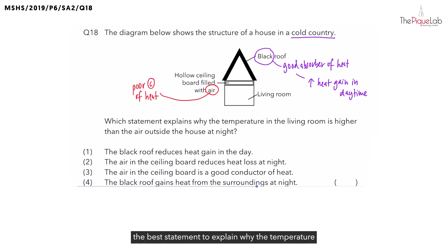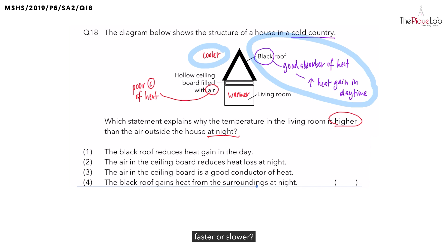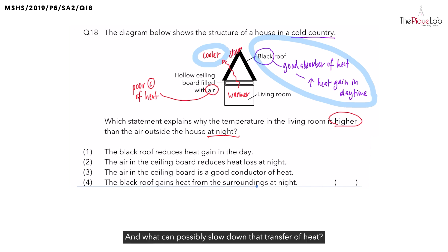The question wants us to find the best statement to explain why the temperature in the living room is higher than the air outside at night. So we have the living room being warmer than the air outside at night. Think about all the heat that is gained from the sun in the daytime. Do you want that heat to escape to the cooler air outside at night faster or slower? We want that heat to escape slower to the cooler air at night. And what can possibly slow down that transfer of heat?